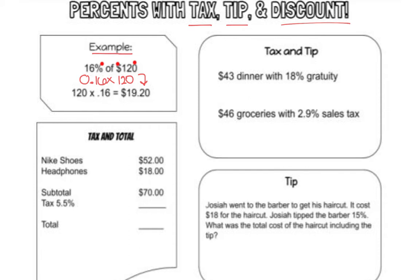Let's start with tax and tip. A $43 dinner with 18% gratuity — the word gratuity is another word for tip. First, let's calculate how much money is the 18% tip. We need to find 18% of 43. Change 18% to a decimal, and 'of' means we multiply: 18% of 43.